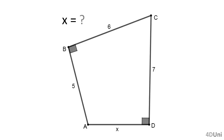In this problem, we are asked to calculate X, given the lengths of the segments AB equal to 5, BC equal to 6, CD equal to 7, and the measures of angles ABC and CDA are equal to 90 degrees.